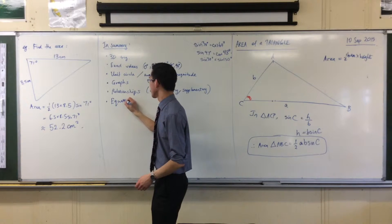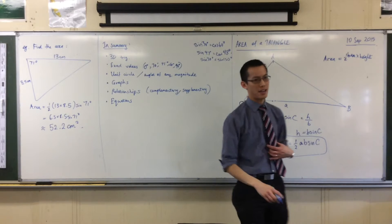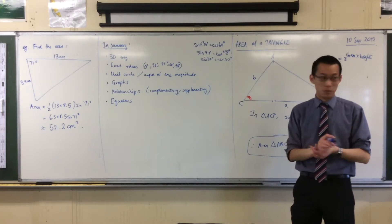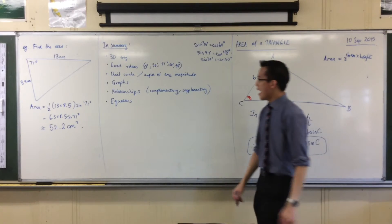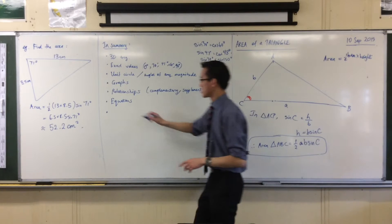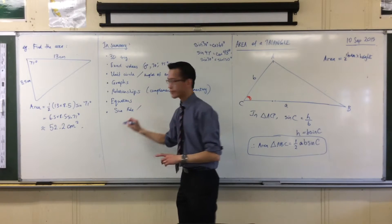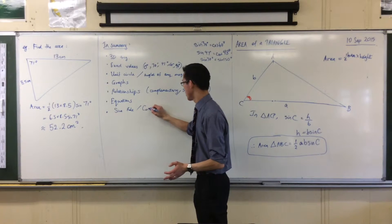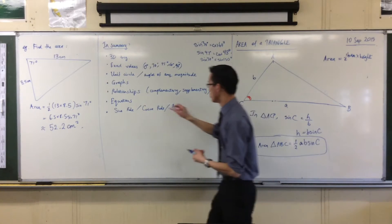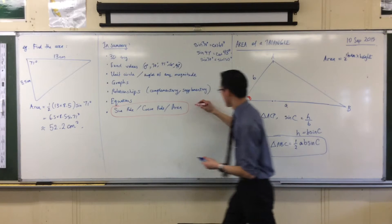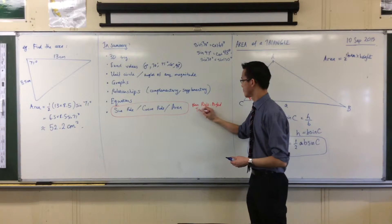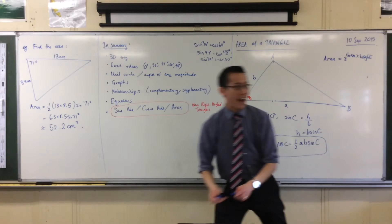We spent some time solving trigonometric equations like tan x equals negative 1 — what are the solutions? How many solutions are there? Or cos x equals root 3 on 2, and so on. Then the last thing we finished off with is all of this measurement stuff in triangles that aren't right-angled. In order, we learned the sine rule, then we learned the cosine rule.